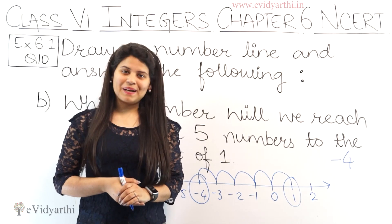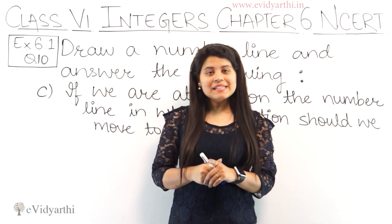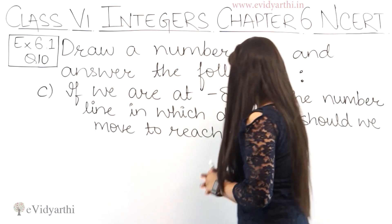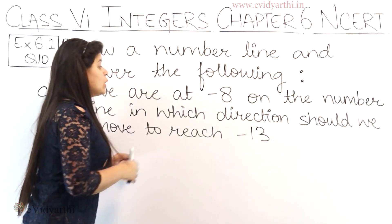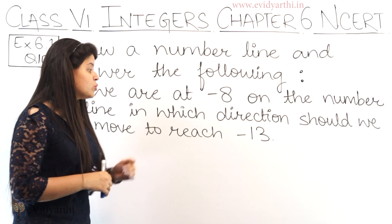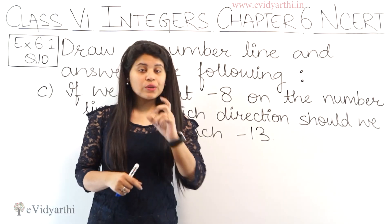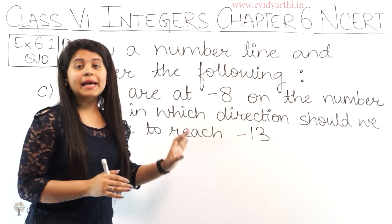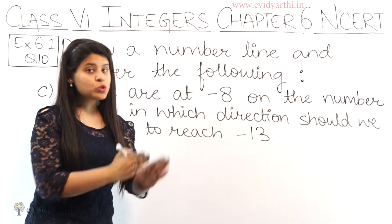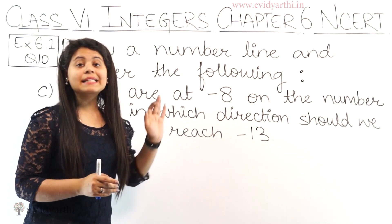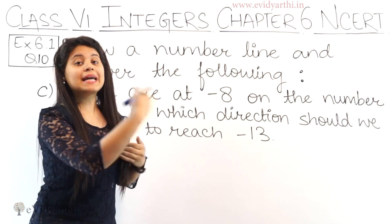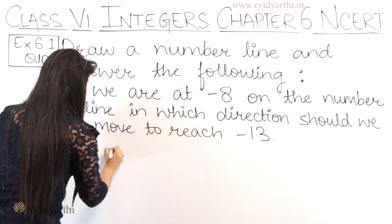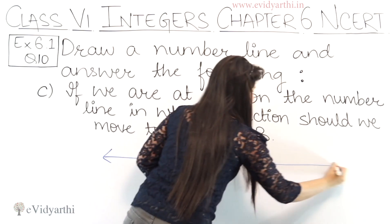Now coming to part C. In part C: if we are at minus 8 on the number line, in which direction should we move to reach minus 13? In this part, we are asked: if you are at minus 8 on the number line, and you have to go to minus 13, do you move right or left? Let's draw the number line.